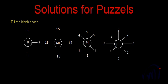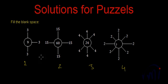Hi. This is a problem in which we are provided with 1, 2, 3 and 4 figures. There is a logic which is followed in the first three figures and based on the same logic we have to fill in the empty space where the question mark is.